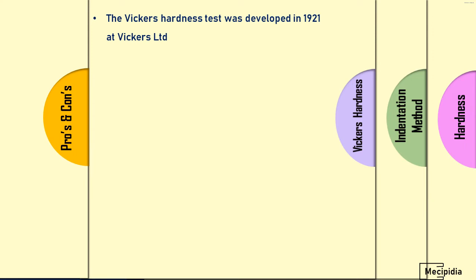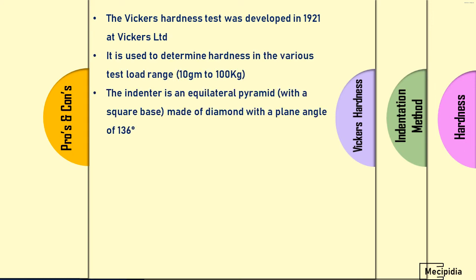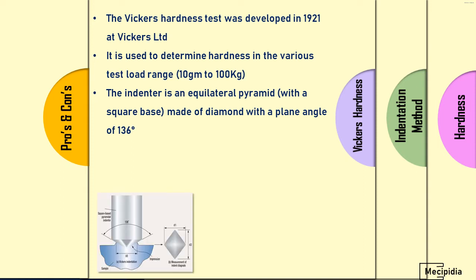Vickers hardness was developed in 1921 at Vickers Limited, a British company. It is used to determine hardness across a wide range of test loads, from 10 grams to 100 kg. This test method has a wide range of testing possibilities and is even called a micro hardness method.